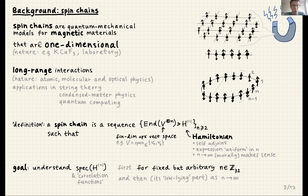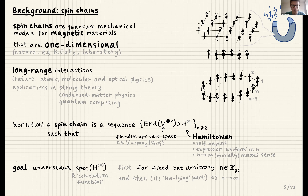Spin chains are special models in that they are one-dimensional, which is actually realistic — certain materials in nature behave this way, and in the laboratory people can make one-dimensional settings. We have a line of atoms with spins, and I often think of this as a ring of atoms that talk to each other. Long-range interactions are when the spins of these atoms can interact across longer ranges. Traditionally these models are studied under the assumption that only neighbors interact, but in nature there are also interactions at longer distances.